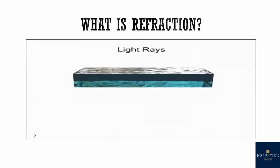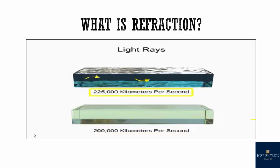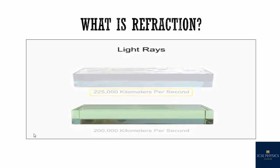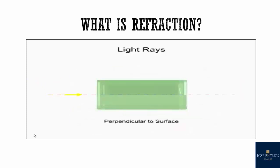As light passes through transparent mediums such as water or glass, its speed is decreased. For glass, it is reduced to 200,000 km per second. And for water, the speed is 225,000 km per second.